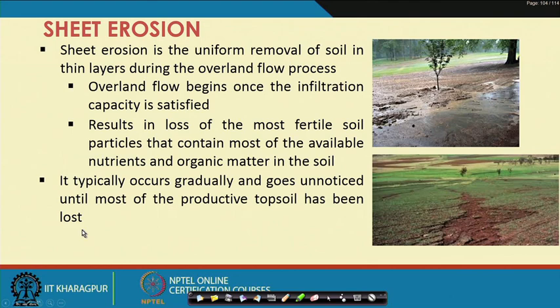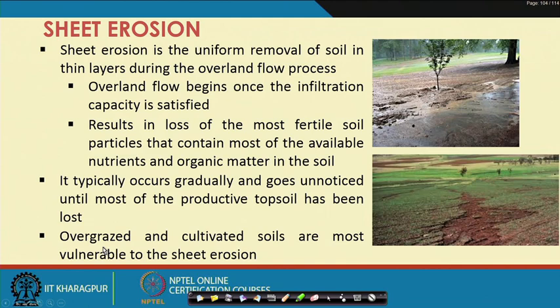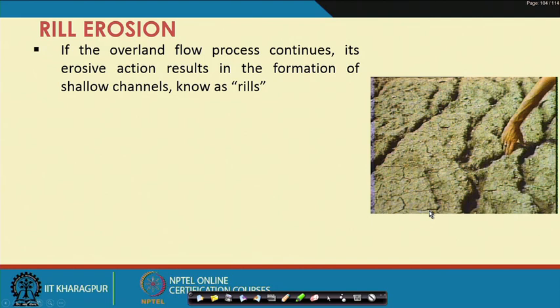Sheet erosion typically occurs gradually and goes unnoticed until most of the productive topsoil has been lost — because it occurs in the form of a sheet, it is very difficult to notice. It goes unnoticed for a long period unless you start seeing exposed patches on the soil surface. It is a very slow but very dangerous process because it takes away all the fertile soil. Overgrazed and cultivated soils are most vulnerable to sheet erosion.